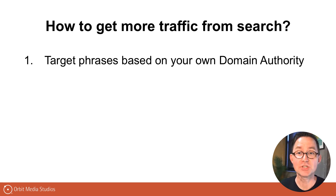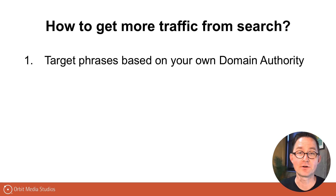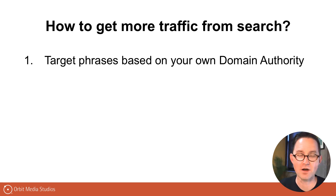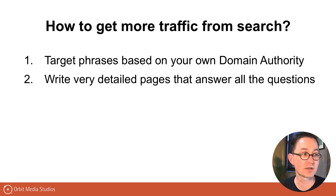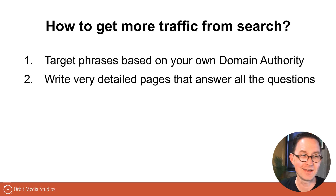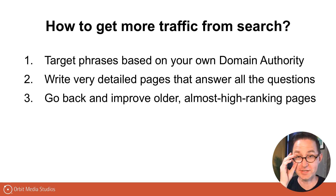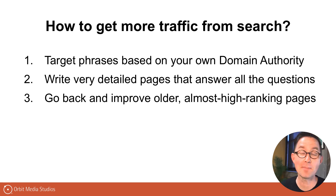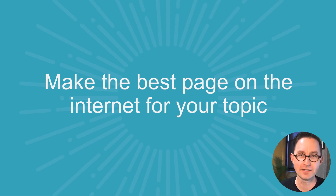How do you get more traffic from search? Target phrases based on your own domain authority. Don't target phrases that are way out of reach for the amount of credibility your domain has. We've got another video and article on how to research keywords — domain authority is the trick. Also, write super detailed articles, thorough pages that answer every one of the related questions. That's semantic SEO. Go back and rewrite older pages, update older pages — the almost-high-ranking pages can make a big difference. It's called optimization because it's not a one-time thing. Ideally, in the end, you've got the best page on the internet for your topic. If you're not doing that, you're really not doing SEO.